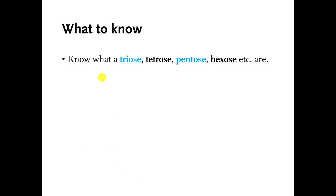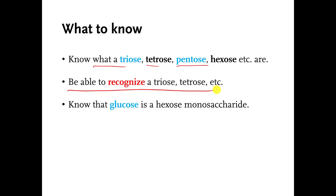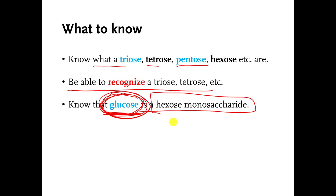So, what do I want you to know? I want you to know what triose, tetrose, pentose, etc. are. You should be able to recognize them. This, you should know, glucose is probably the most important carbohydrate that we deal with, that humans deal with in the world. So, you should know that glucose is a hexose monosaccharide. So, you should memorize that or write it down. You should know what monosaccharides are used for. We can either break them into smaller pieces and get energy from them, or we can connect them to each other and make bigger carbohydrates.